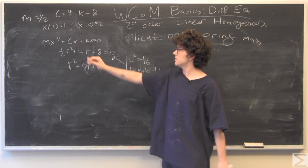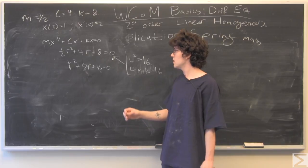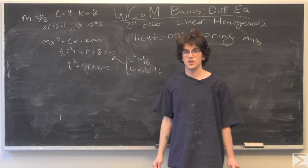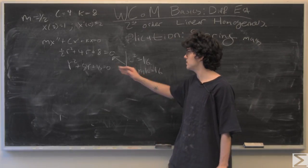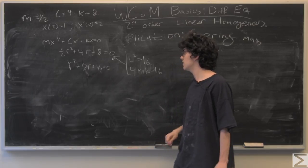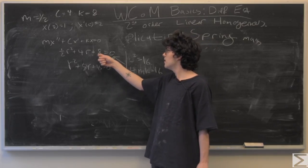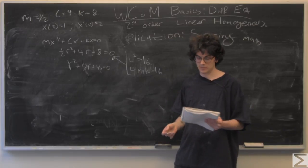We're going to set up our general equation. I've set up our characteristic equation to find the roots. The first thing we're always going to check is what is c squared and what does 4mk equal. In this case, we see that c squared equals 16, and 4mk is equal to 16. So we have a critically damped case.